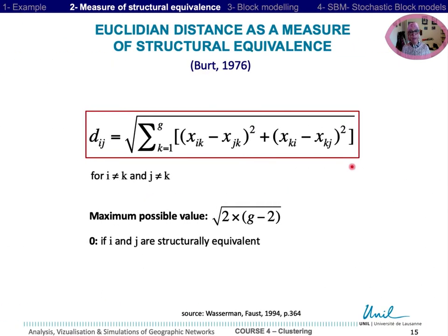Berth introduced the Euclidean distance to measure the structural equivalence between two nodes, i and j. It depends on their own relation with every other k nodes of the graph, making the sum of the two directions, a or g to k, or k to i and g.